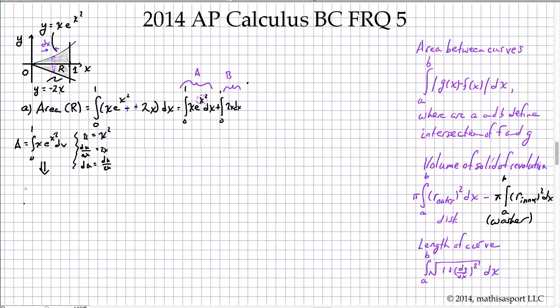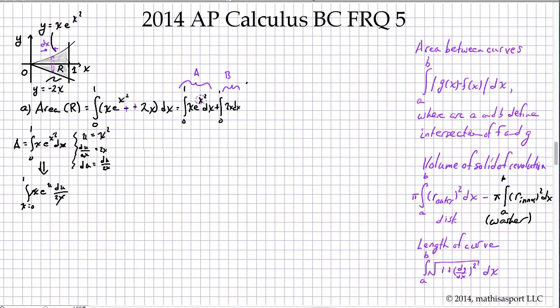So we can rewrite this entire thing as x e to the u, and in place of dx, we're going to write du over 2x. Those x's cancel. This is from x equals 0 to 1. How can we further simplify? Well, e to the u du, we know how to do that integral. That's just e to the u. So we'll just substitute back in that this is 1 half e to the x squared evaluated from 0 up to 1. And that's going to give us 1 half e.